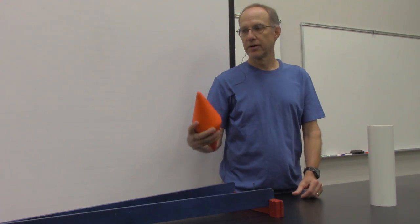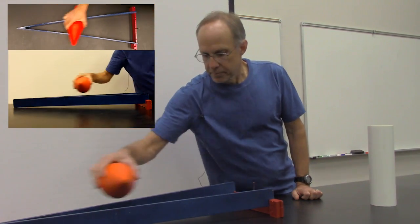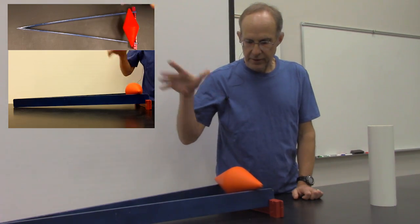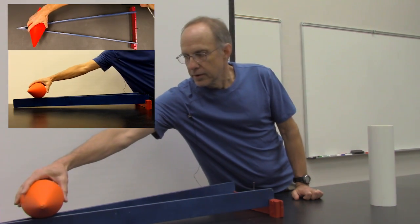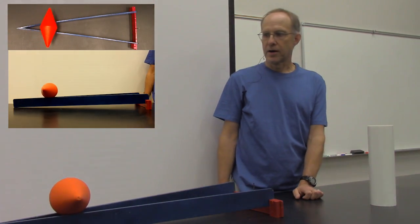So, for example, if I take this special double cone, then rather than rolling down the hill, it rolls up the hill.